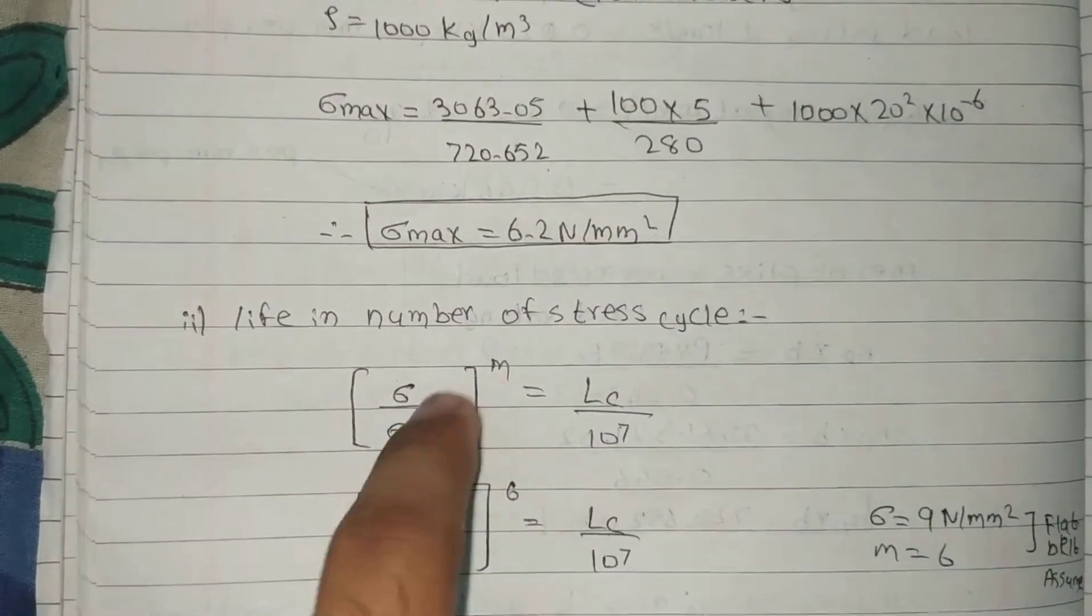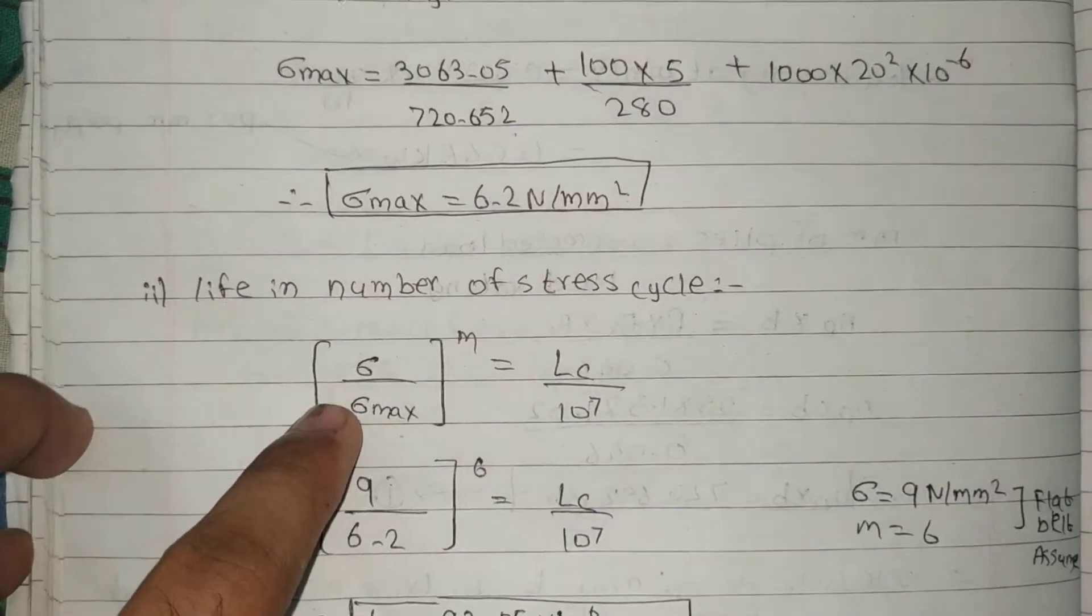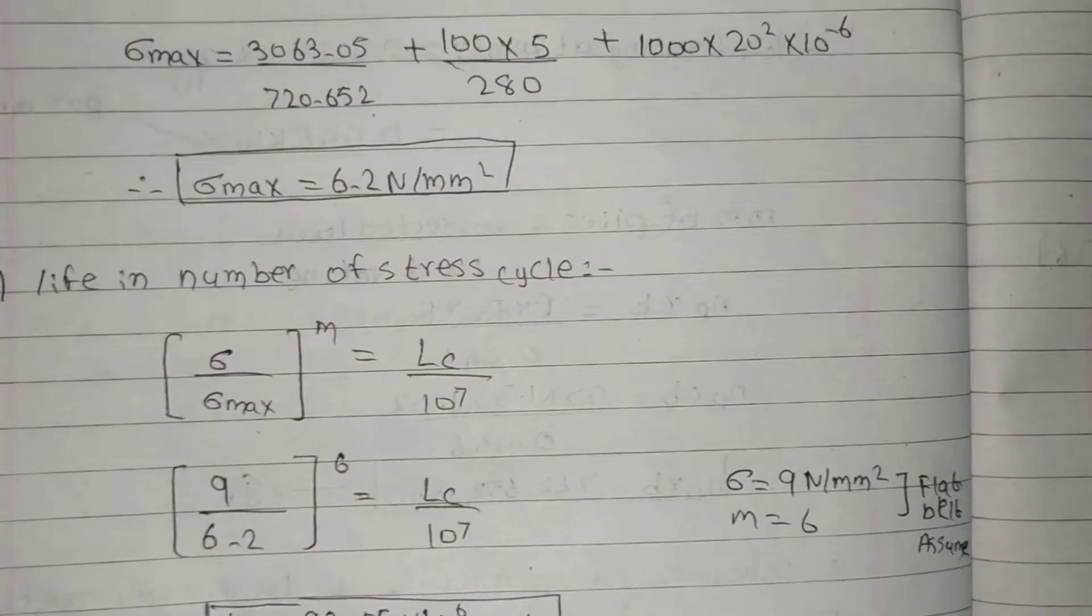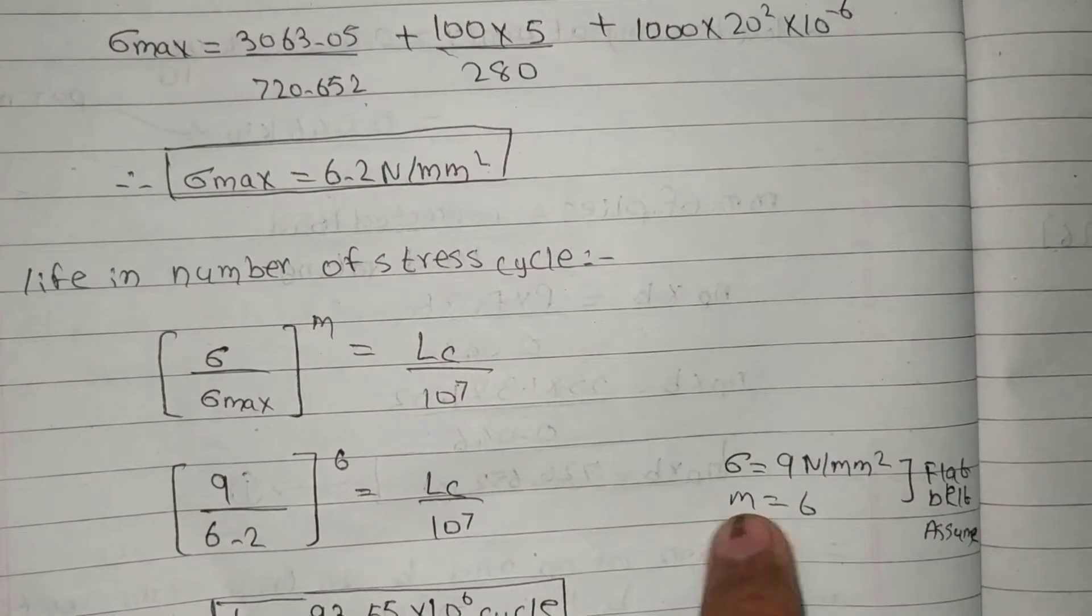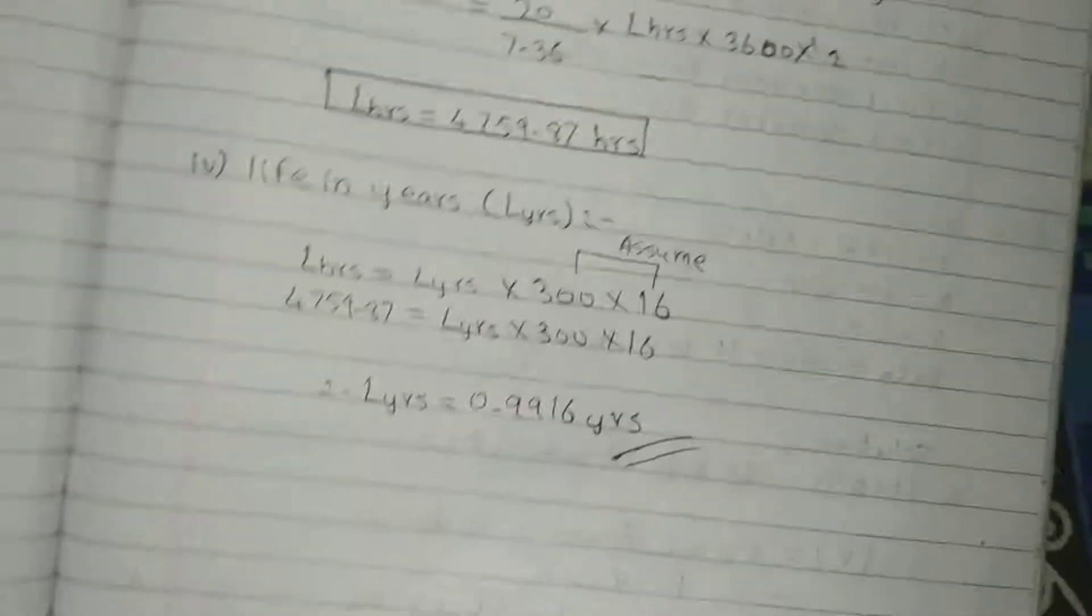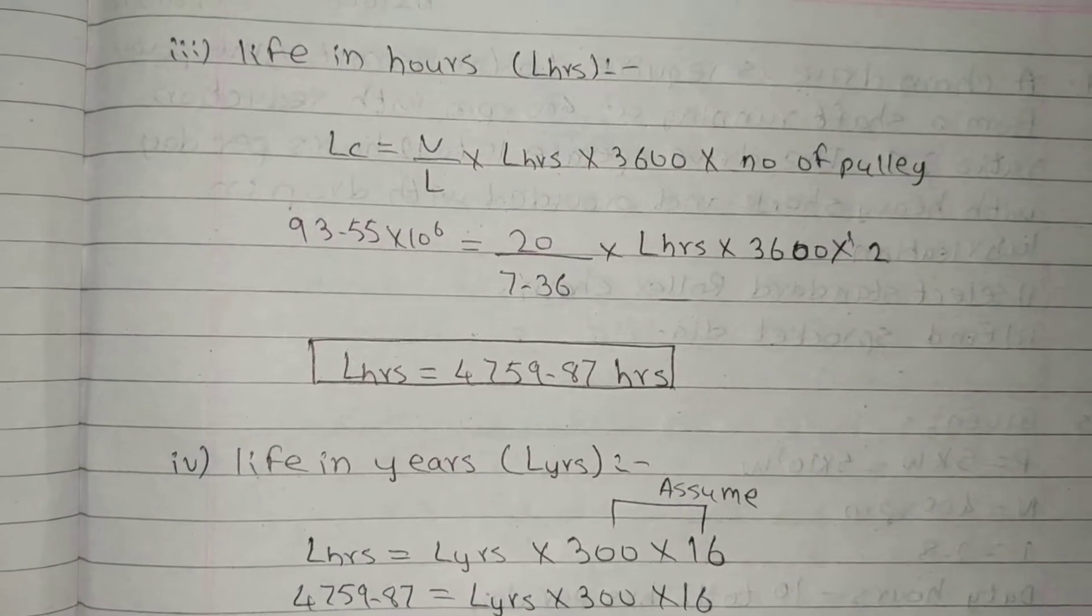Sigma upon sigma max raised to m is equal to Lc upon 10 raised to 7. Sigma. This is flat belt. For flat belt, m would be 6. This is Lc calculated. Life in hours, Lc is equal to formula. This one.